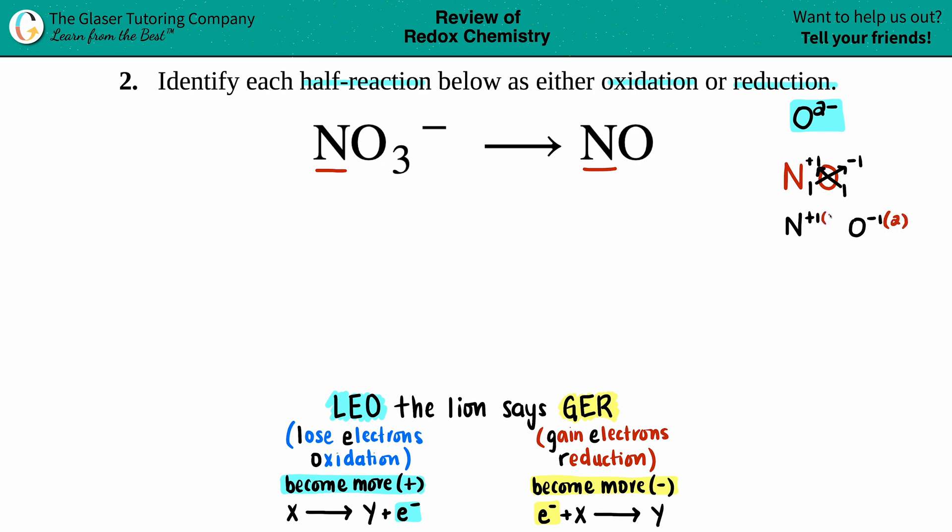So in this case the nitrogen is going to be a plus two. Okay, so now we know that I have an N+2 on this side. Now let's just see what that nitrogen is going to be on the other side. So maybe I'll say NO3.